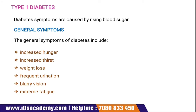For Type 1 diabetes, the symptoms include increased hunger, increased thirst, weight loss, frequent urination, blurry vision, and extreme fatigue. If someone has Type 1 diabetes, they will experience excessive urination and a constant, persistent hunger.